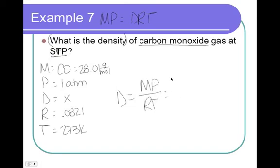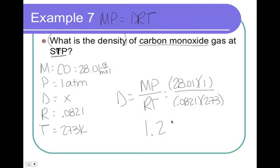So, rearrange this equation for D. And you get D equals MP over RT. So, M is 28.01. Pressure is 1. R, 0.0821, and temperature is 273. Plug this into your calculator. I don't have this one worked out yet. And I get 1.25. And this is density, so grams per liter.